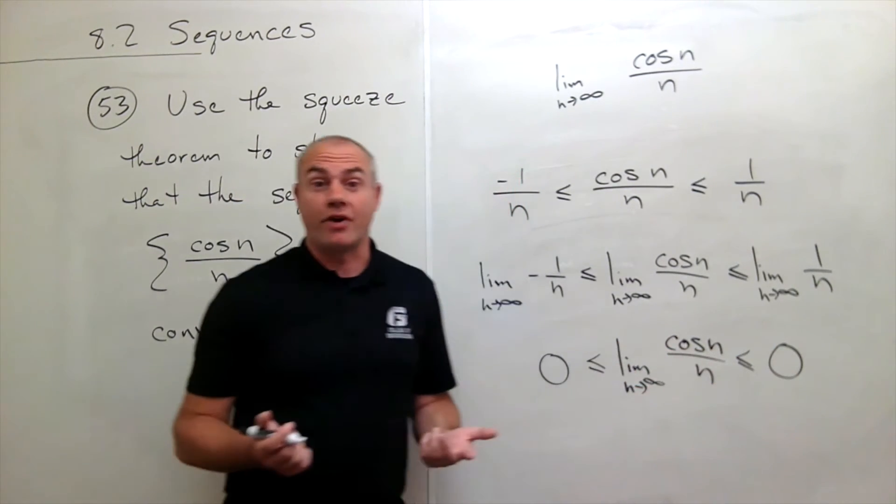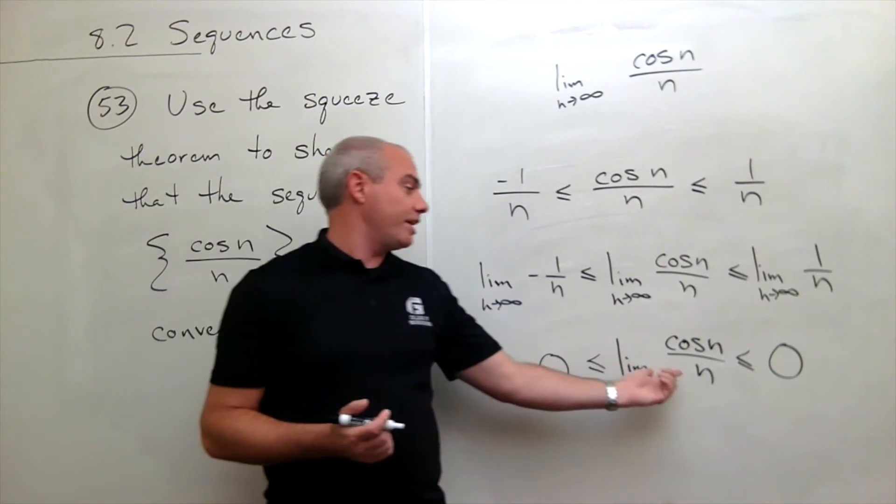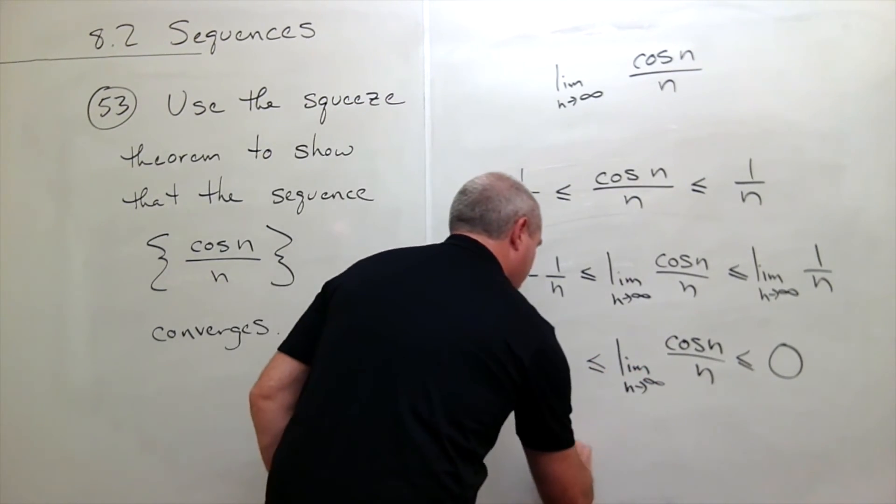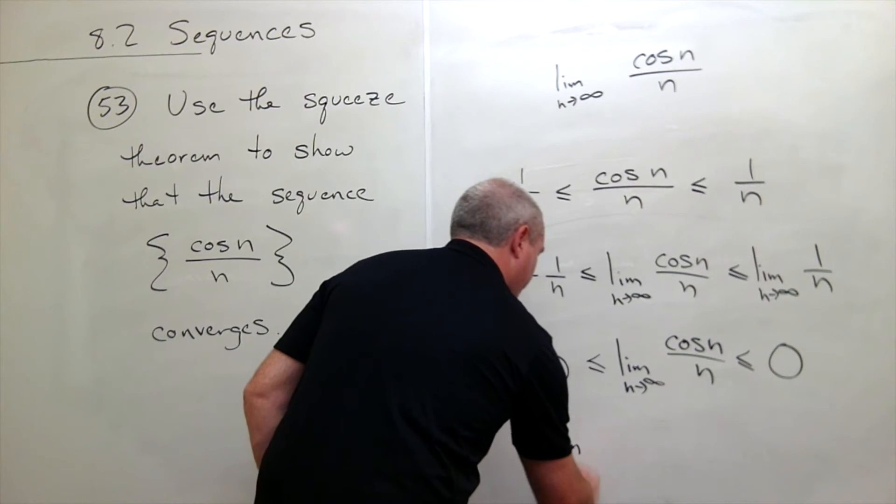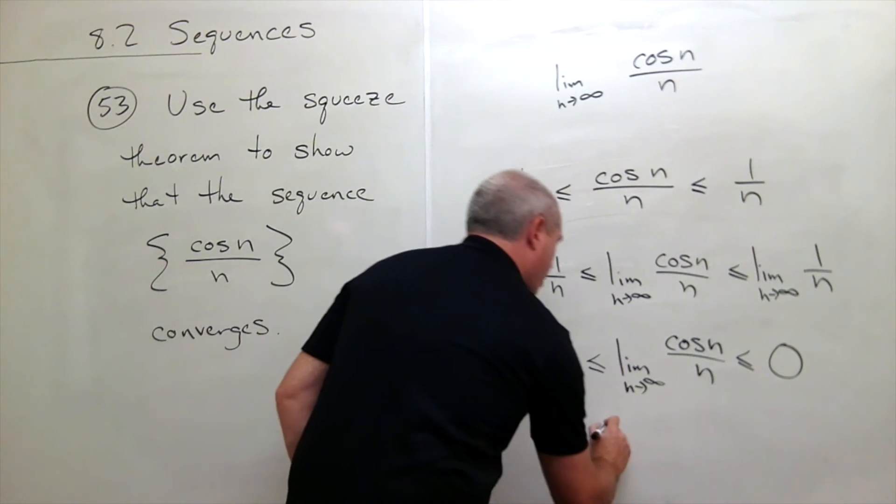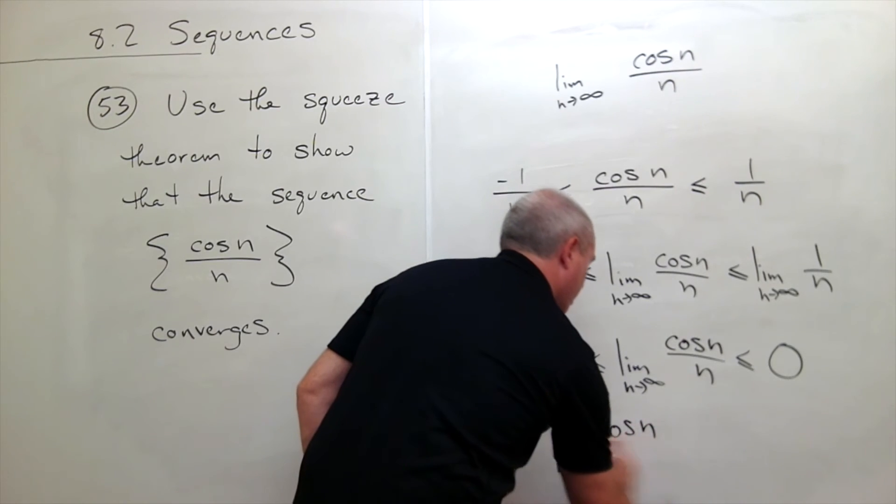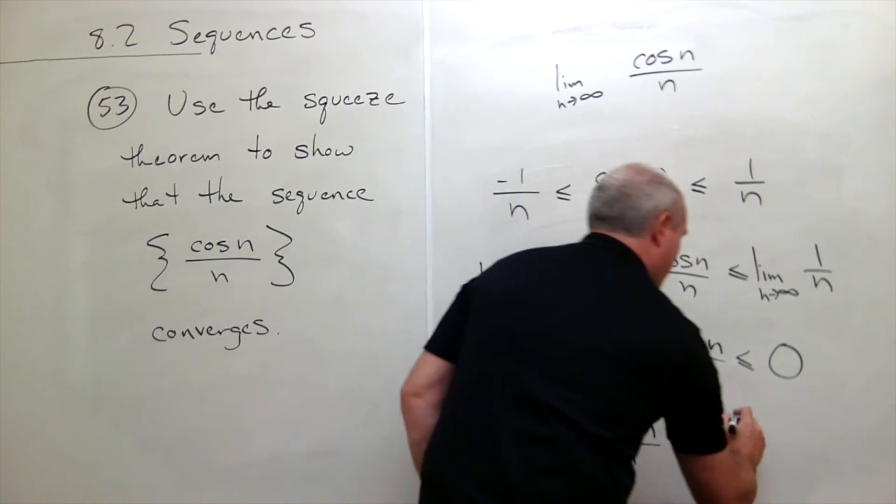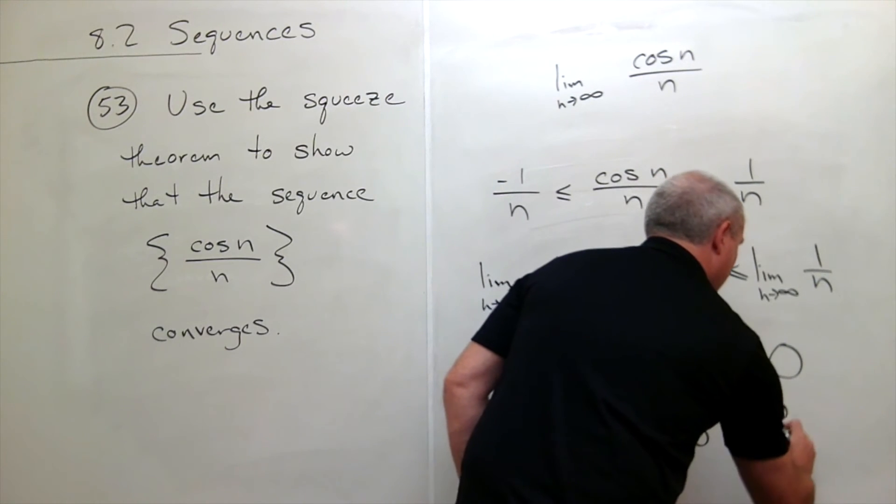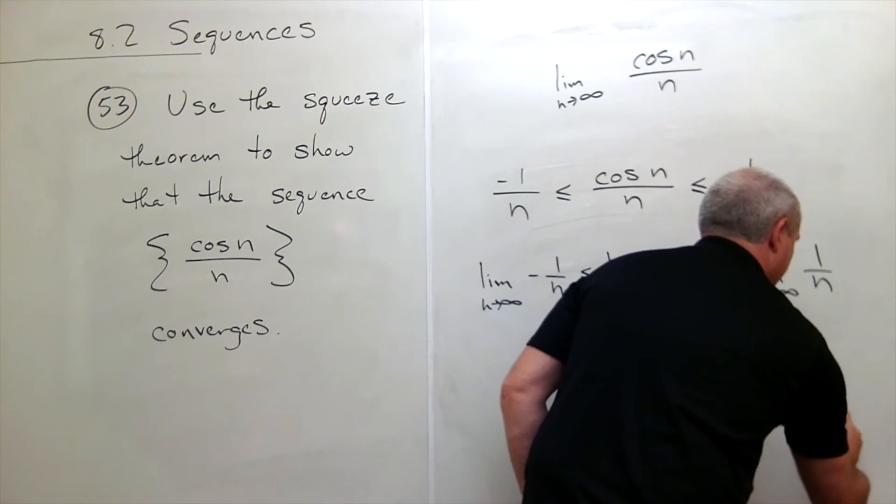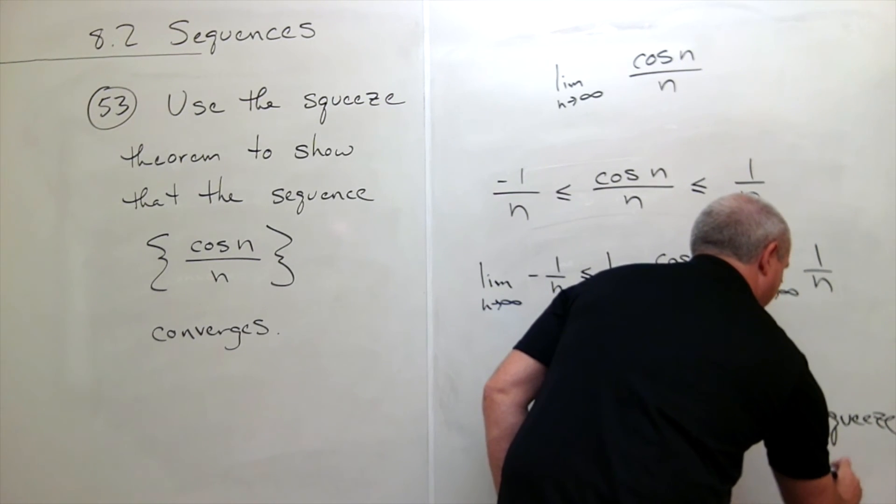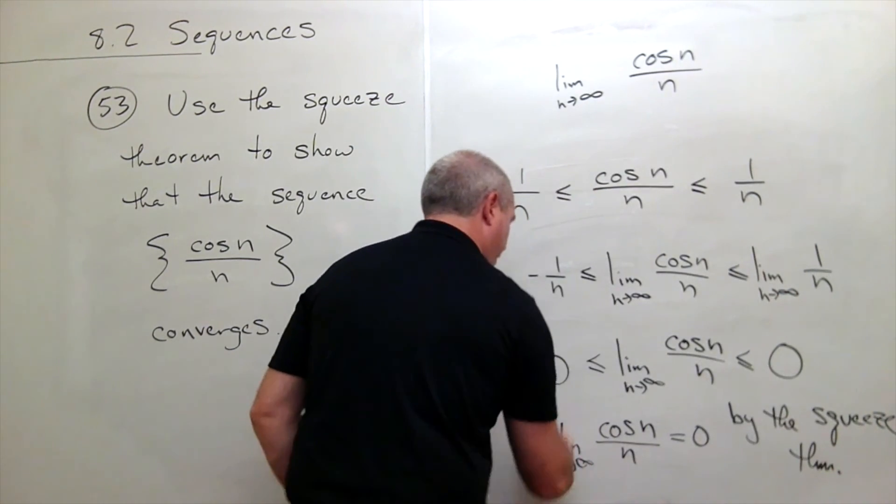And so we're done, right? We know what this limit is, it must be 0. So I can write that the limit as n goes to infinity of cosine n over n must be 0 by the squeeze theorem. And we're done.